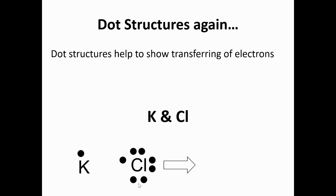Okay, so the dot structures. Let's do these as Lewis dot structures. They'll help us to show the transfer of electrons. So here we have K attaching to Cl, which is potassium attaching to chlorine. Now potassium has one valence electron. Chlorine has seven.